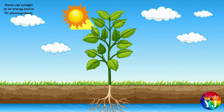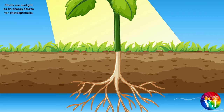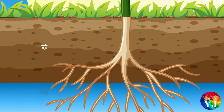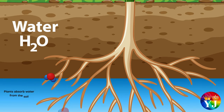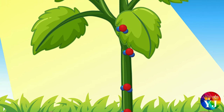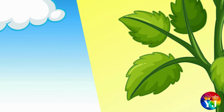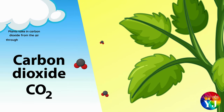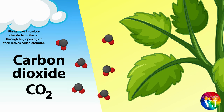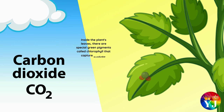Plants use sunlight as an energy source for photosynthesis. Plants absorb water from the soil through their roots. Plants take in carbon dioxide from the air through tiny openings in their leaves called stomata. Inside the plant's leaves, there are special green pigments called chlorophyll that capture sunlight.